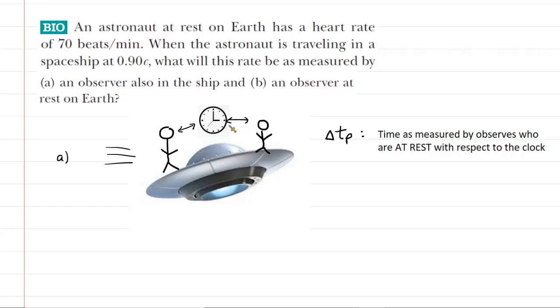The answer is no. The clock is just sitting there on the spacecraft. The observer is sitting there on the spacecraft and the astronaut is sitting there on the spacecraft. They're not moving relative to each other. And therefore, because they're not moving relative to each other, if the astronaut's heart rate is 70 beats per minute, then the observer on board the spacecraft will also measure that same heart rate.